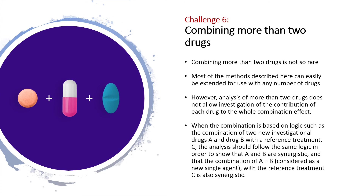Drug combination analysis is often presented on drug pairs in order to ease its understanding and because it covers the most common situation in practice. But combining more than two drugs is not so rare — for example, cancer chemotherapy regimens can easily reach four or five agents. Although most of the methods described can easily be extended for use with any number of drugs, analysis of more than two drugs does not allow investigation of the contribution of each drug to the whole combination effect. A complete understanding of the contribution of each drug to the whole combination effect would require an assessment over all sub-combinations, which is generally not feasible in practice.